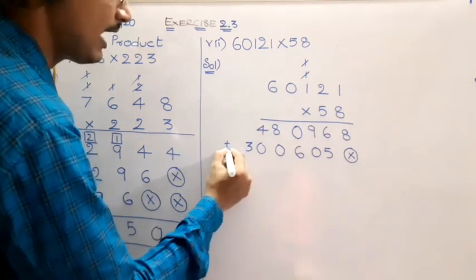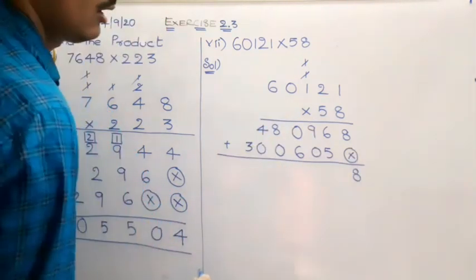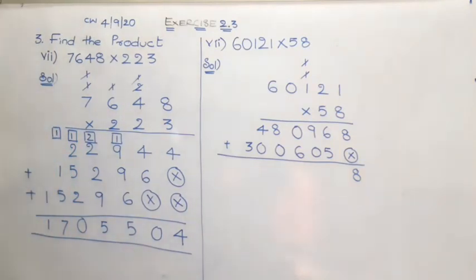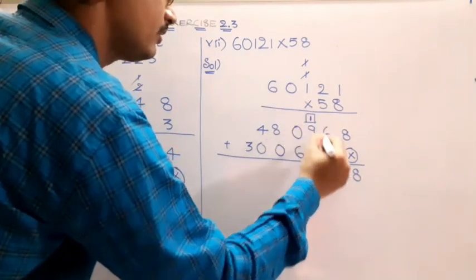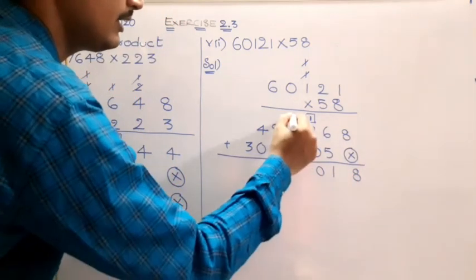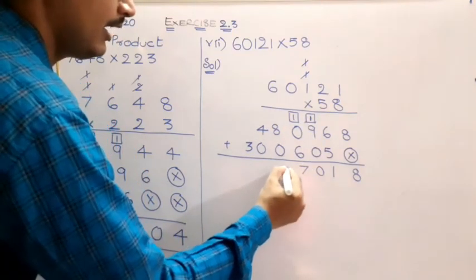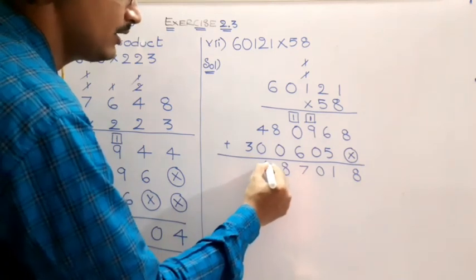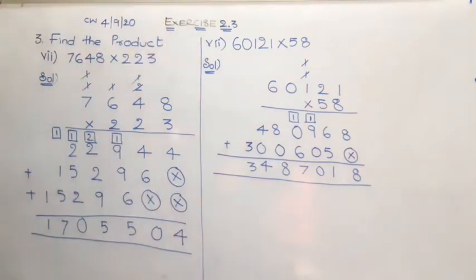So as we have to add the individual terms. 8. So for the carry, 6 plus 5, it is 11. So 1 here and 1. 1 plus 9 is 10. So 0 here and the carry. 1 plus 6 is 7. 8 plus 0 is 8. 4 plus 0 is 4. And the leftover 3. Okay, so this one is the 8th one.